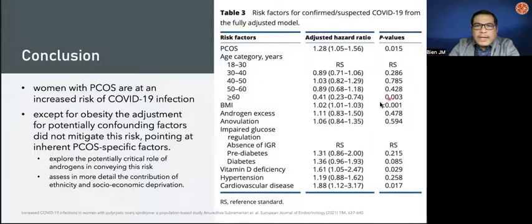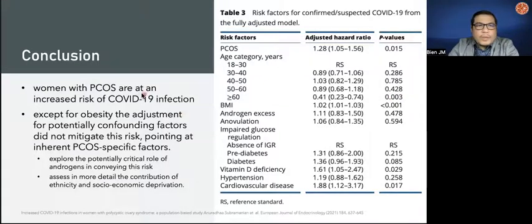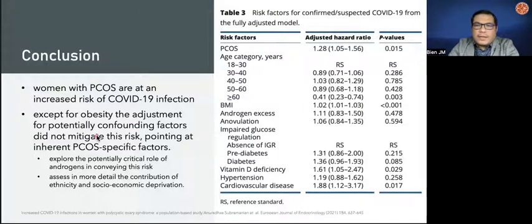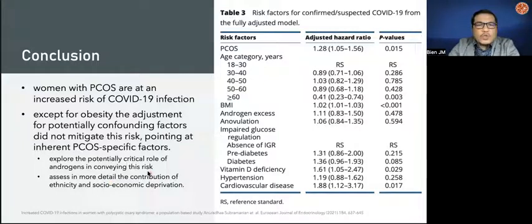BMI is an important risk factor in this group of patients as well as age. This study showed that women with PCOS are at an increased risk for COVID-19 infection. Except for obesity, adjustment for potential confounding factors did not mitigate this risk, pointing to inherent PCOS-specific factors. We need to explore the potential critical role of androgen in conveying the risk for PCOS and COVID and assess in more detail the contribution of ethnicity and socioeconomic deprivation in this analysis.